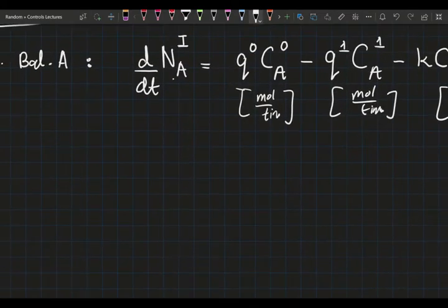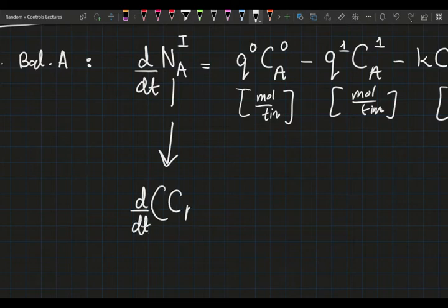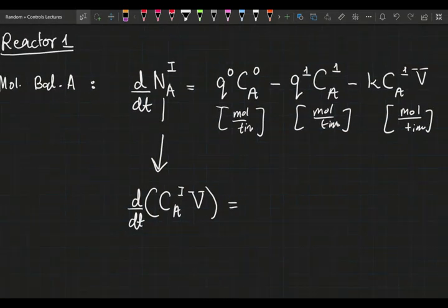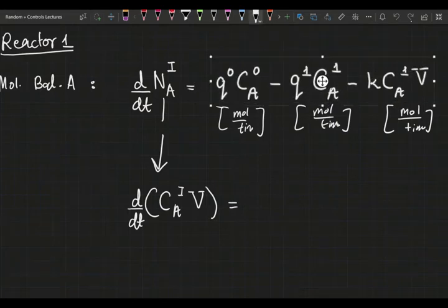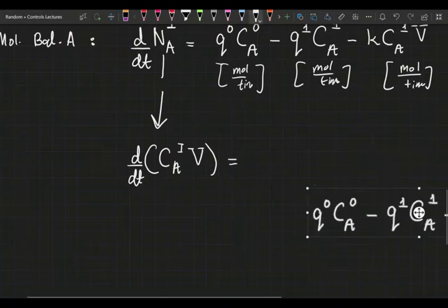Now, let's see how I can rewrite this number of moles term, the N_A. The number of moles is just equal to the concentration inside the tank multiplied by the volume of the tank, right? And everything else is still the same. Everything else on the right-hand side has not changed. Let's just bring that here.